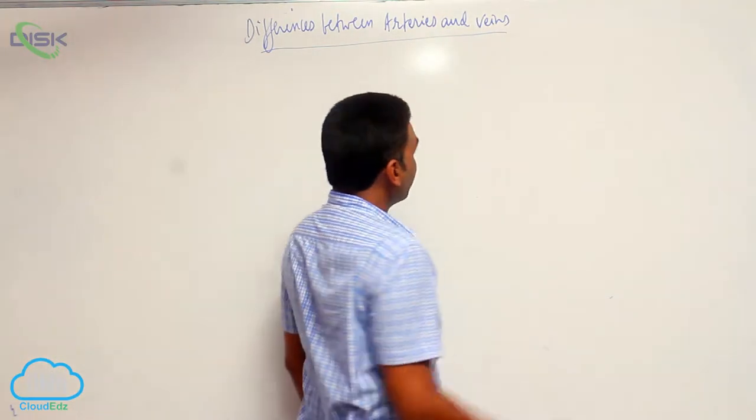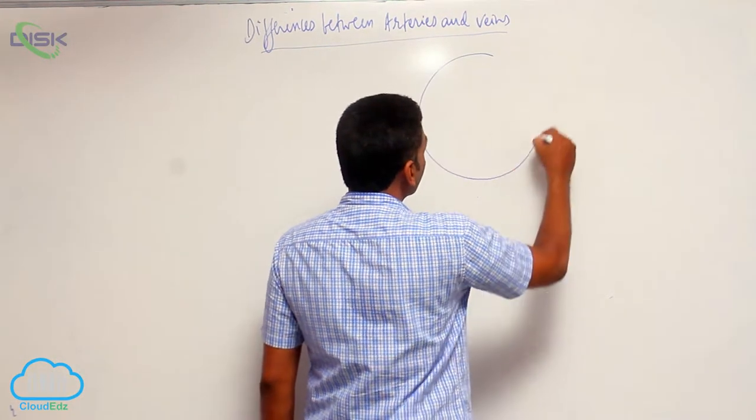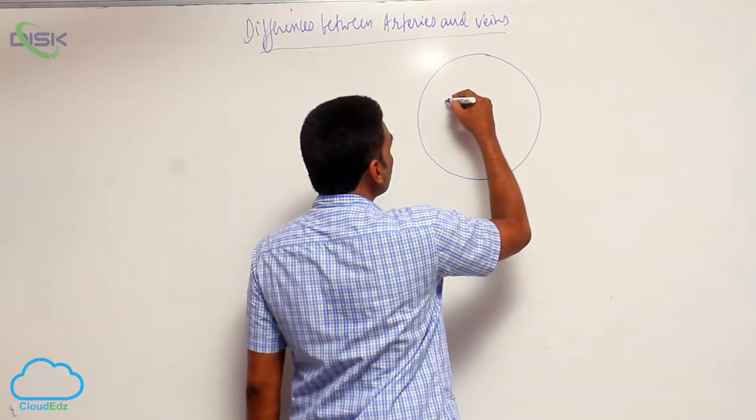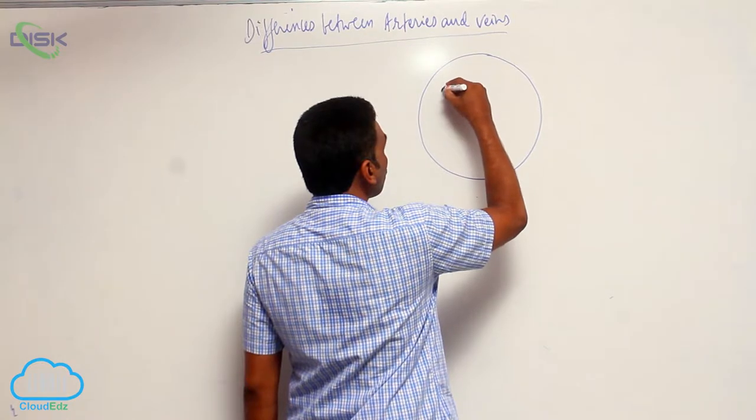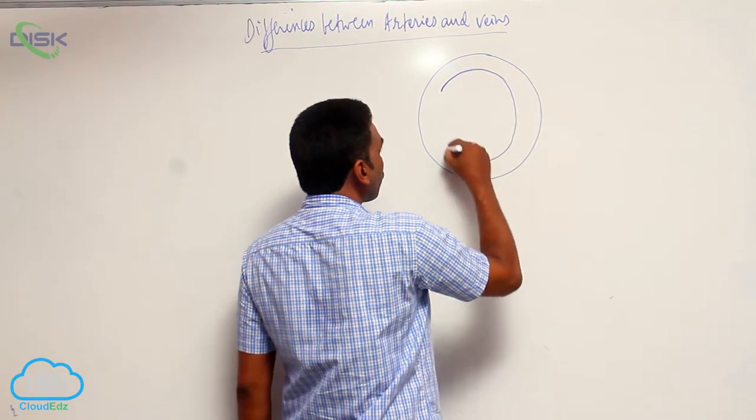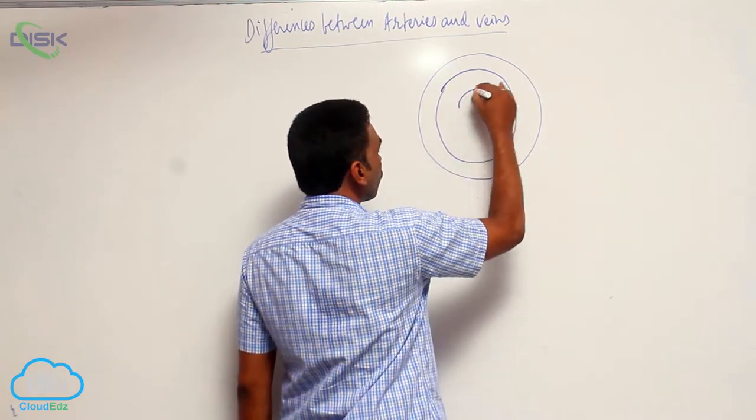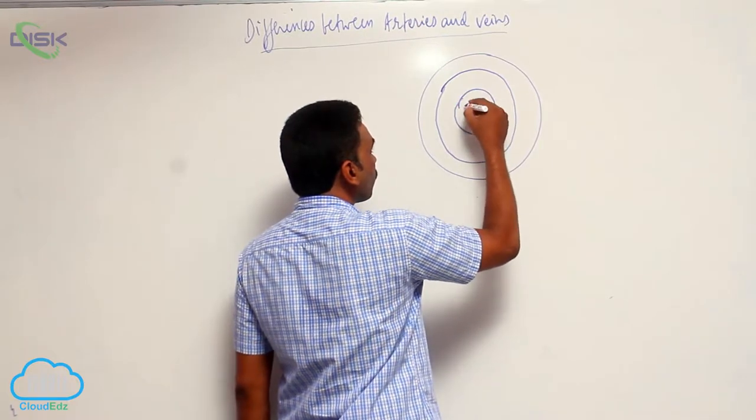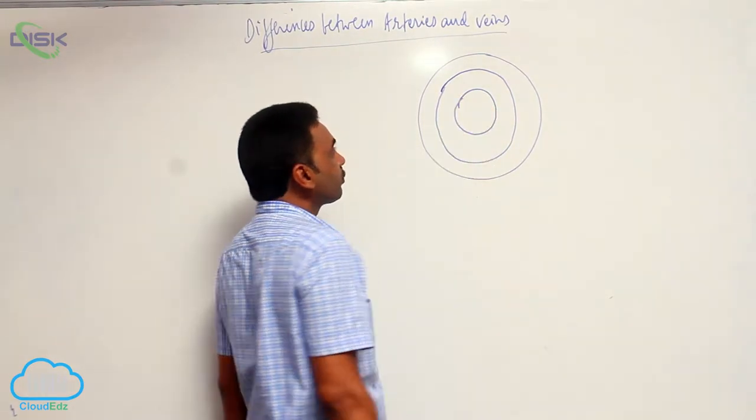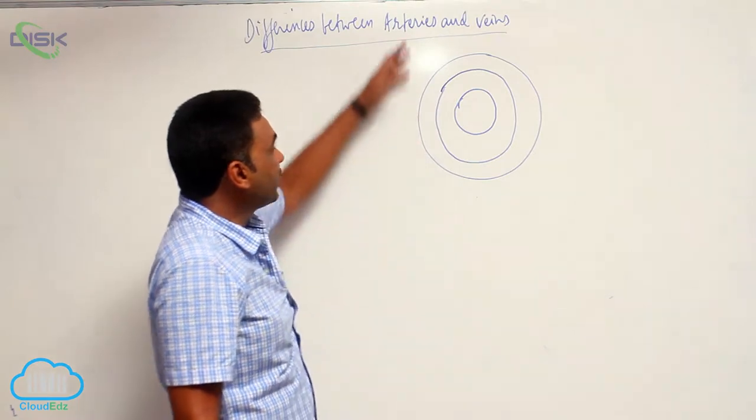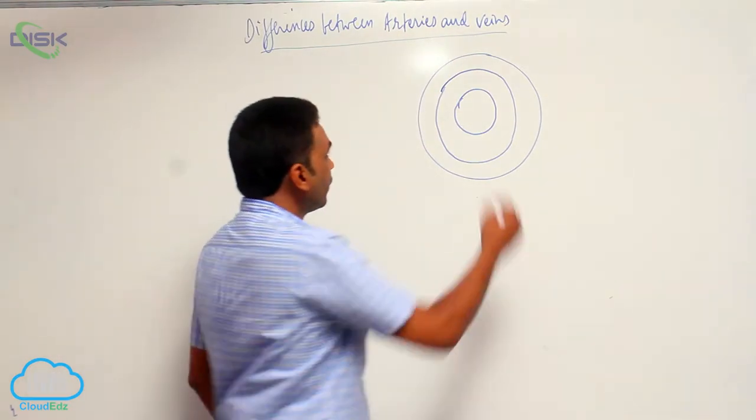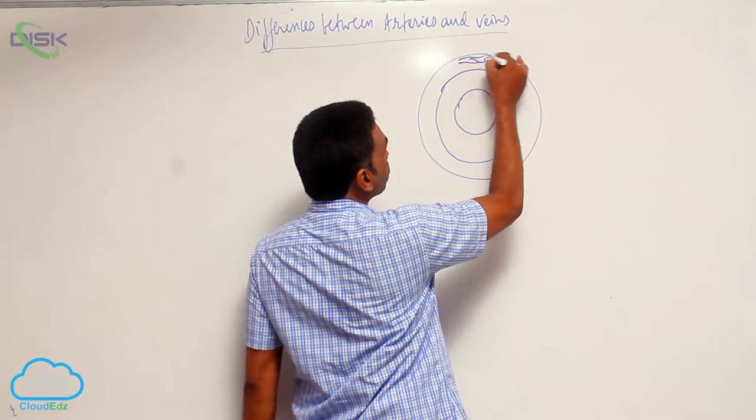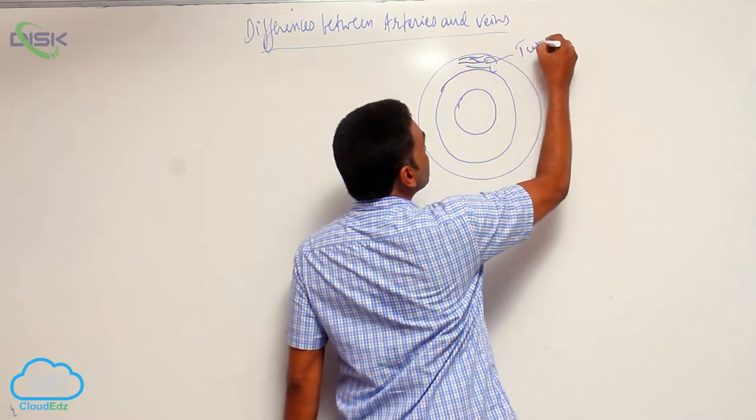When I take an artery, whether it is arteries or veins, it contains the same three layers. The outermost layer is tunica externa.